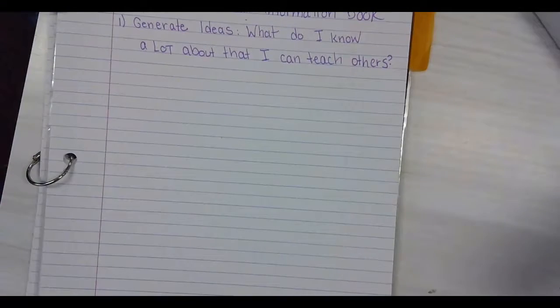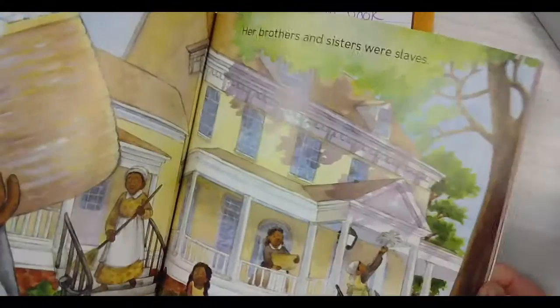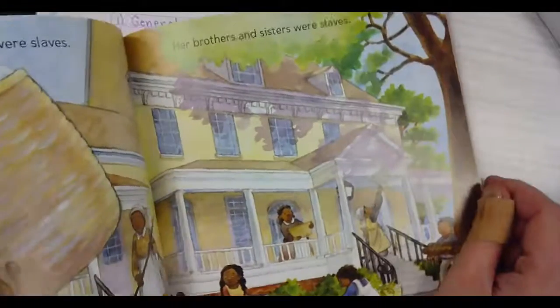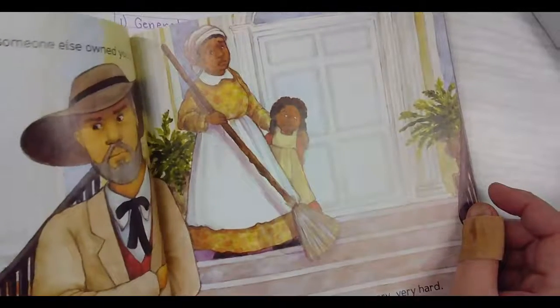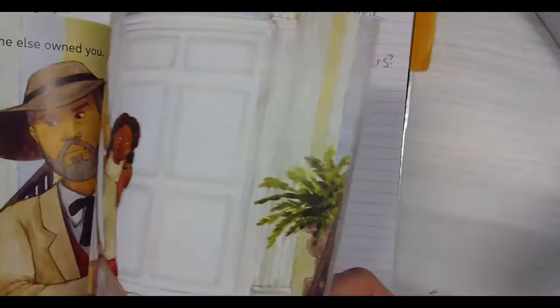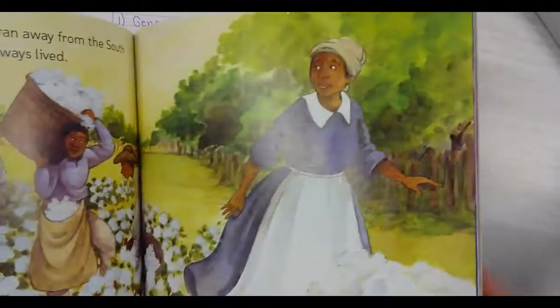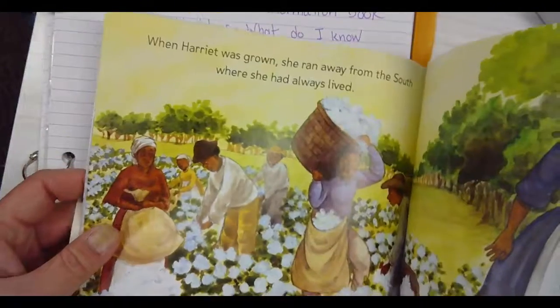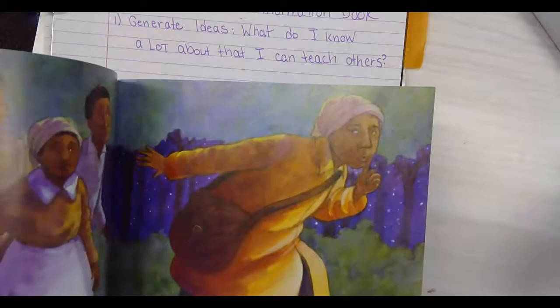This is a biography on Harriet Tubman. Biography is a story about a real person. She helped all those slaves go free. She got hit in the head, and this is them picking cotton. She got hurt in the head, so she would have splitting headaches for the longest of times.